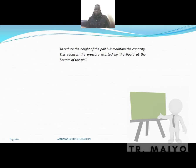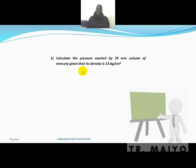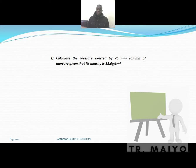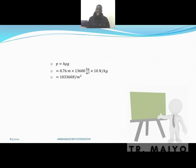Calculate the pressure exerted by a 76 mm column of mercury, given its density is 13.6 g/cm³. Convert 76 mm to meters: 76/1000 m. Convert 13.6 g/cm³ to kg/m³: multiply by 1000 = 13,600 kg/m³. G = 10. P = (76/1000) × 13,600 × 10. This gives the pressure in N/m².